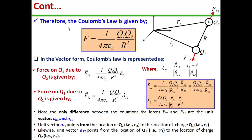Therefore, Coulomb's law is given by F = (1/4πε₀) · Q1·Q2 / R², where the proportionality constant K is replaced by 1/(4πε₀). Now we will see how Coulomb's law is represented in vector form.